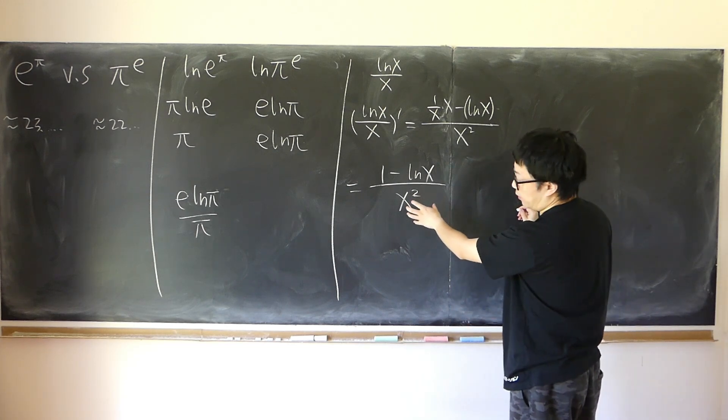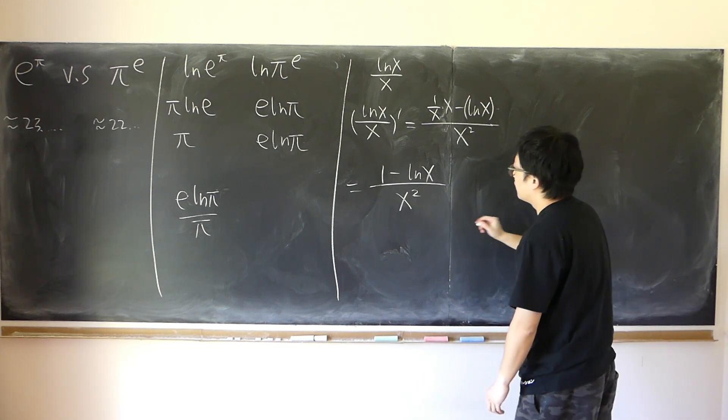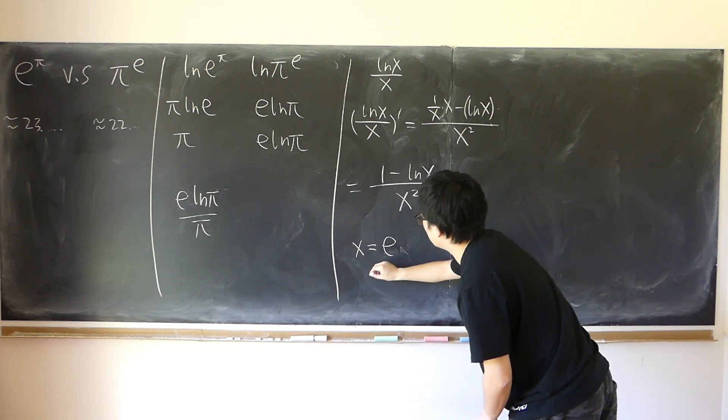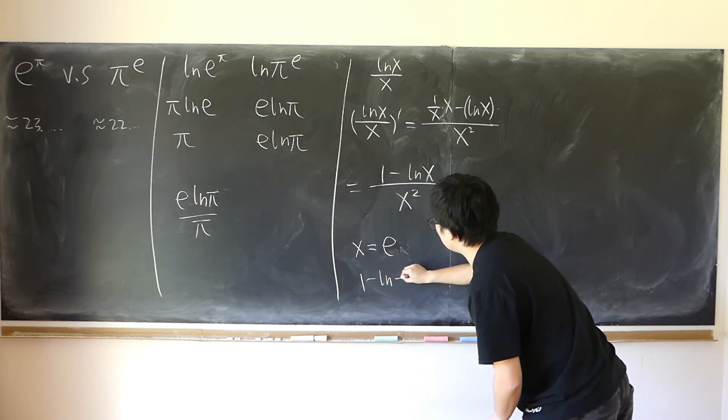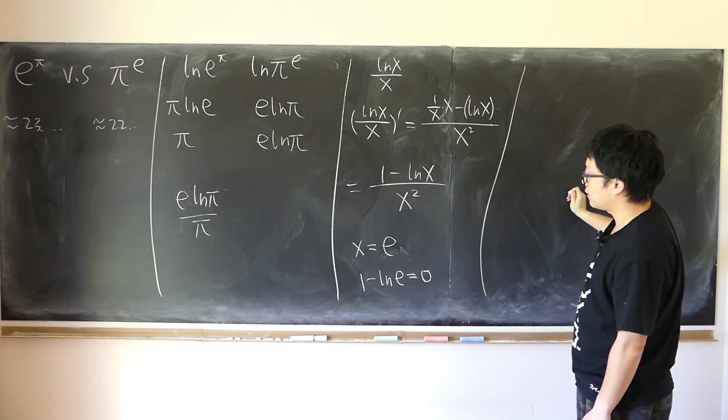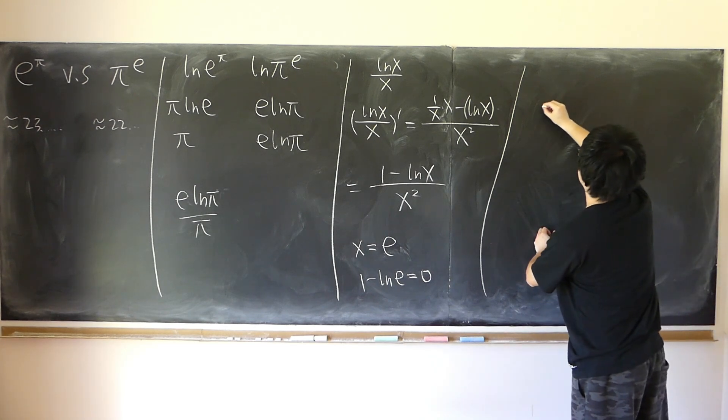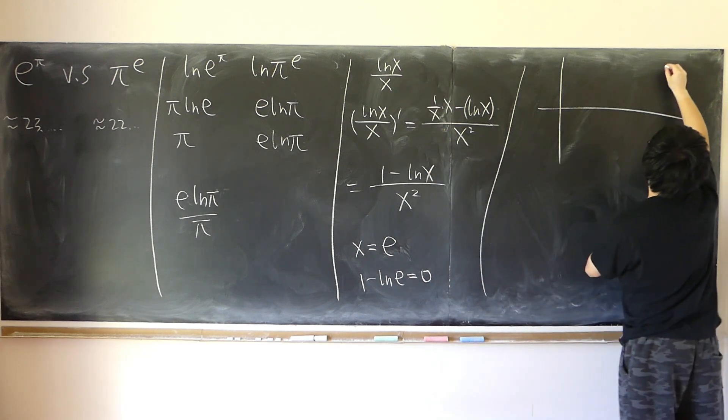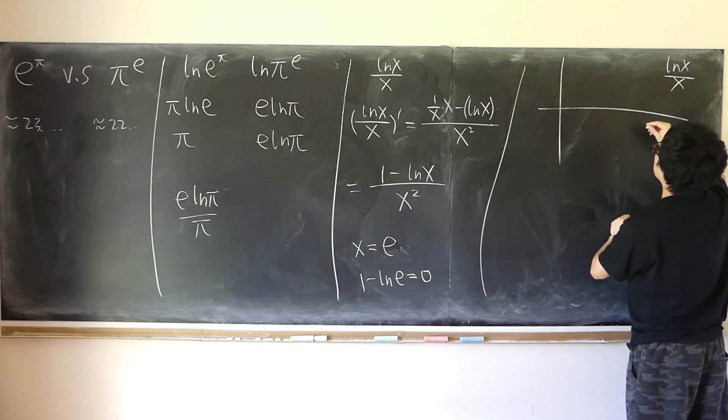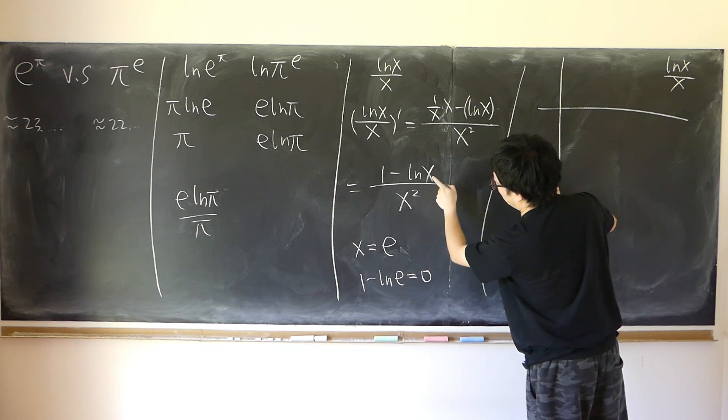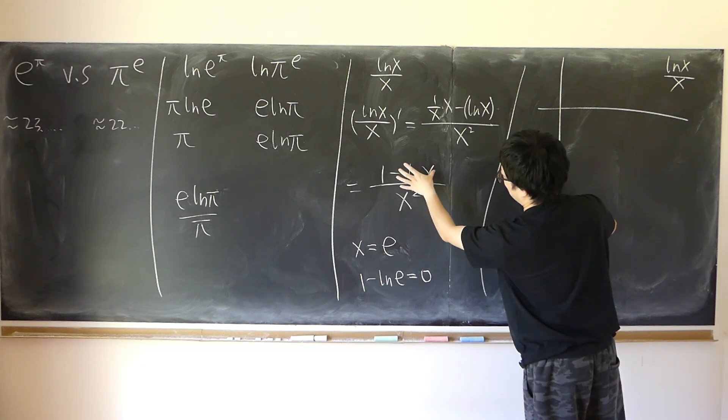So the bottom is already positive. And so what about the top? The top becomes zero when x is equal to e. And we have 1 minus log e equal to zero. So that tells us the graph of this function, log x over x. Since when x is bigger than e, log is bigger than 1, so the whole thing is negative.